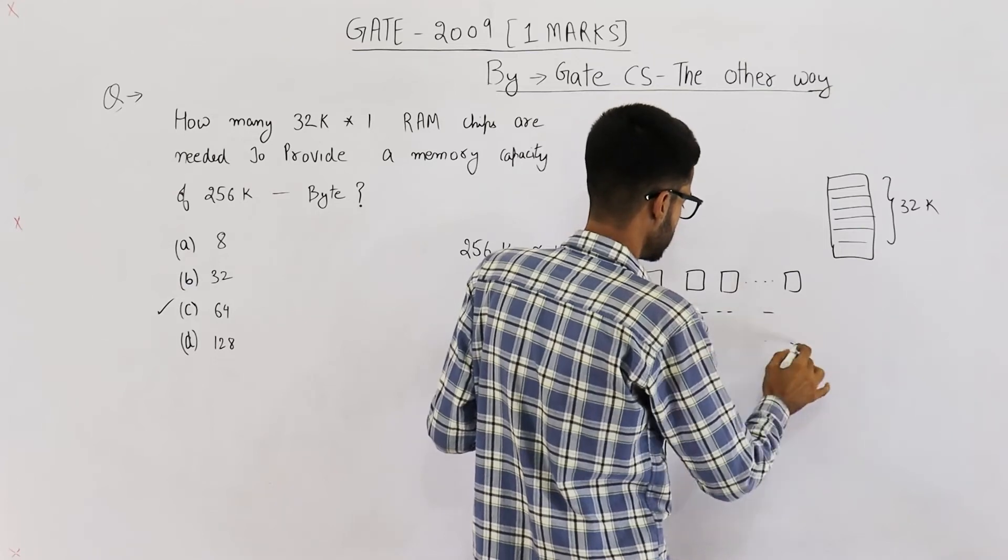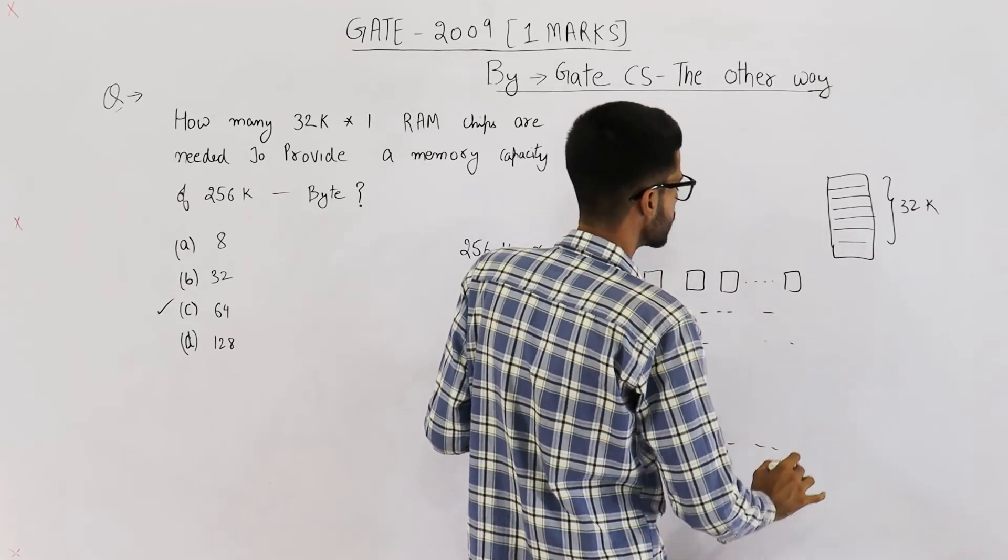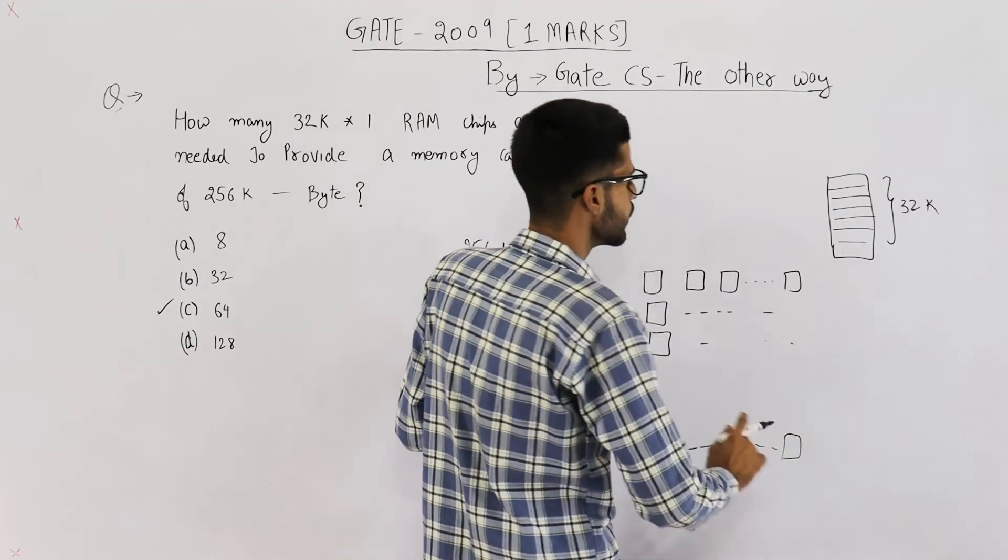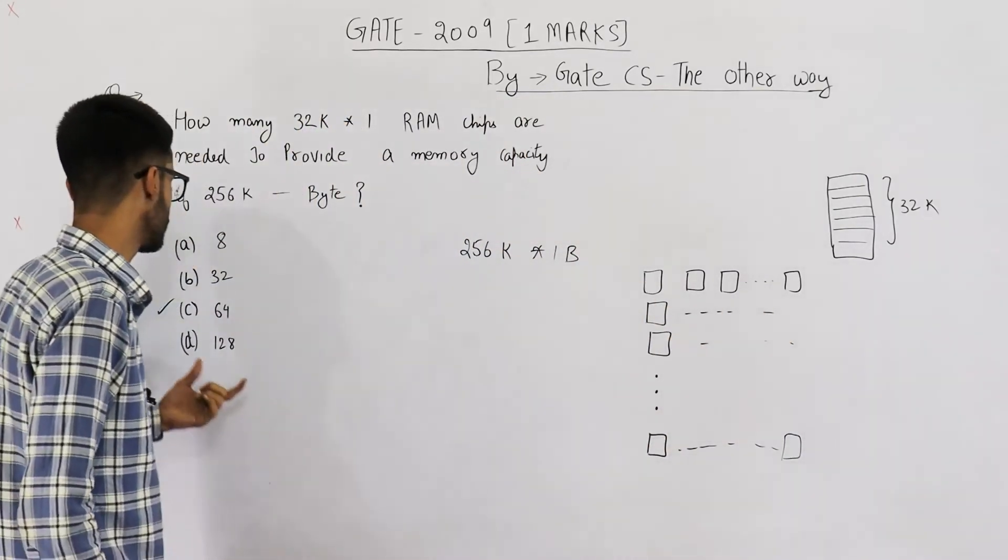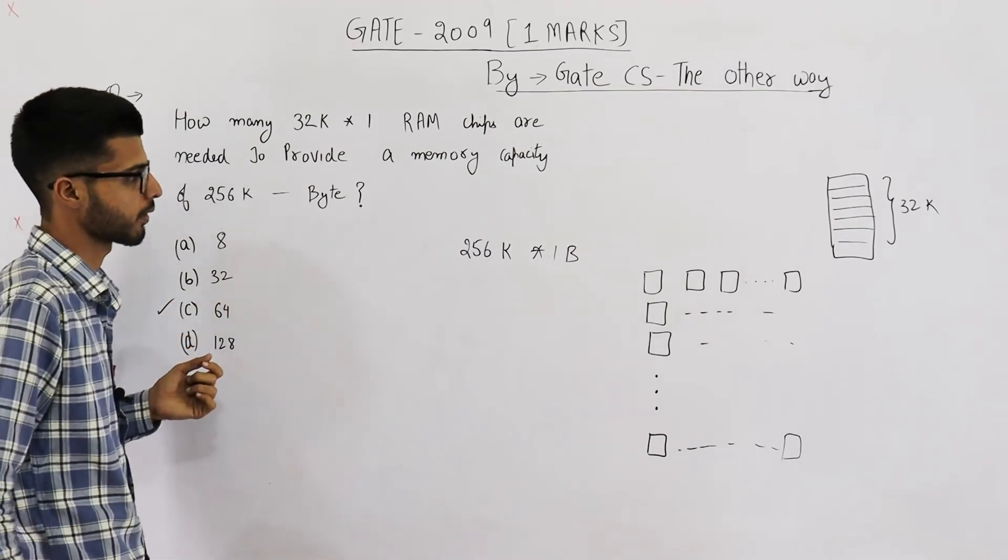So we will form such a matrix where we have 8 rows of 8 columns each. So 8 x 8 is 64 chips.